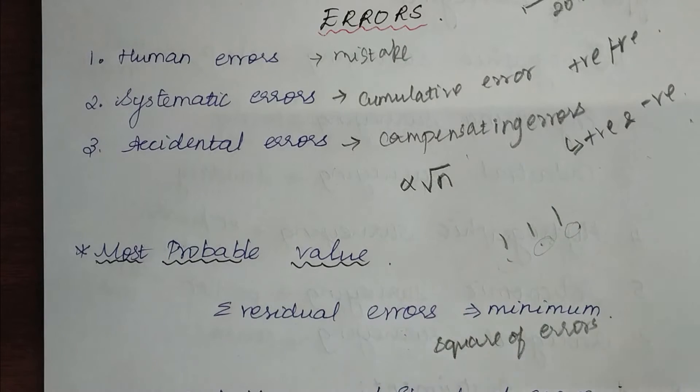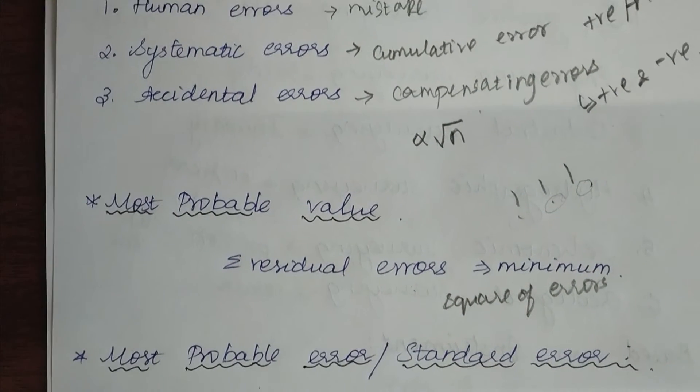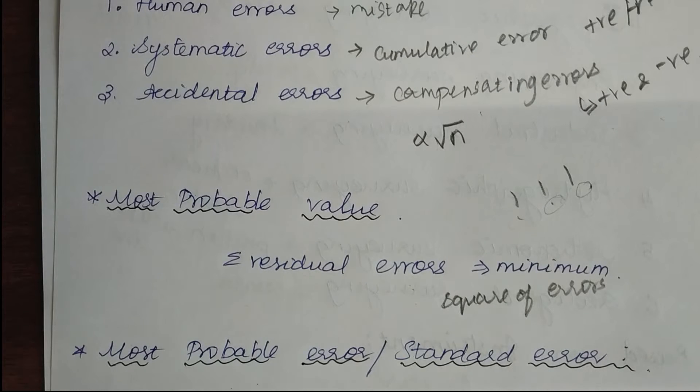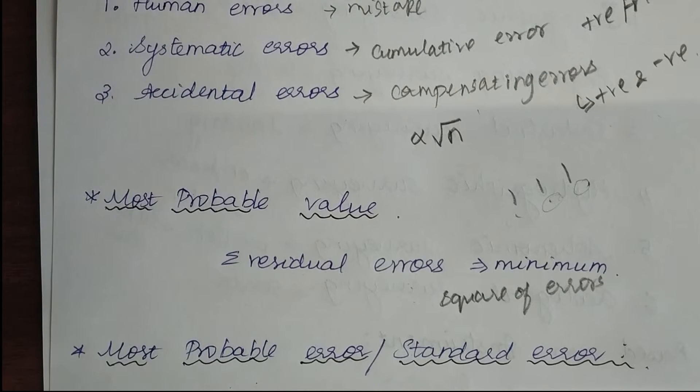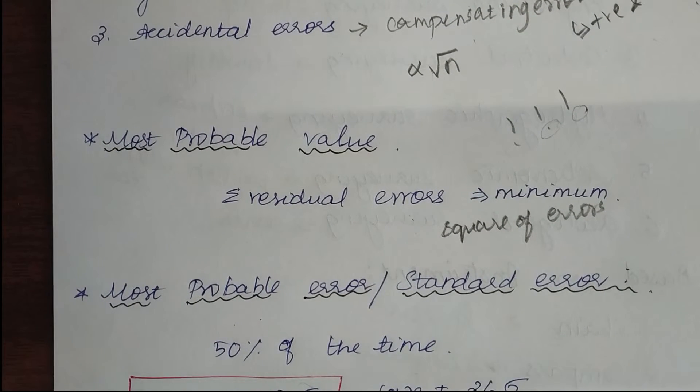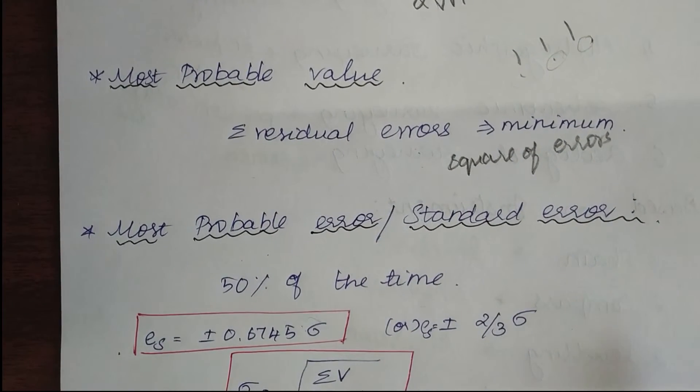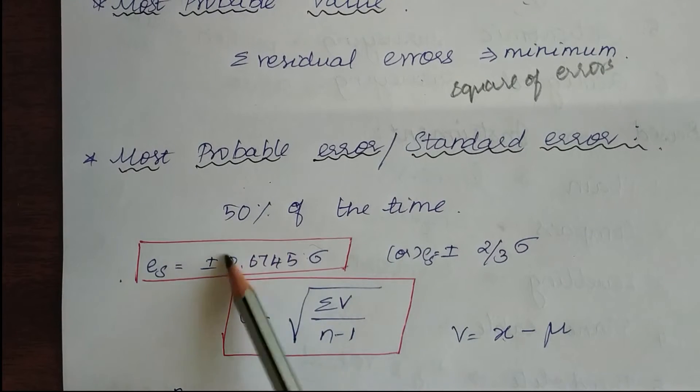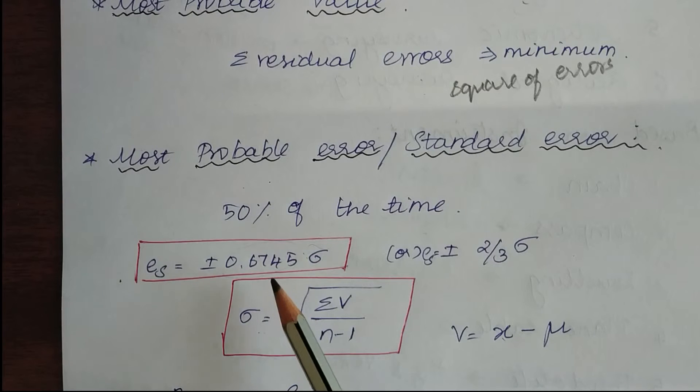The next definition is most probable error. In every set of observations, the standard error is likely to happen 50 percent of the time. It can be numerically represented as es equals plus or minus 0.675 times standard deviation.